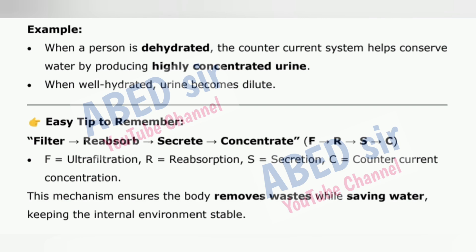When well hydrated, urine becomes dilute. Easy tip — FRSC: F = Ultrafiltration, R = Reabsorption, S = Secretion, C = Countercurrent concentration. This mechanism ensures the body removes wastes while saving water, keeping the internal environment stable.